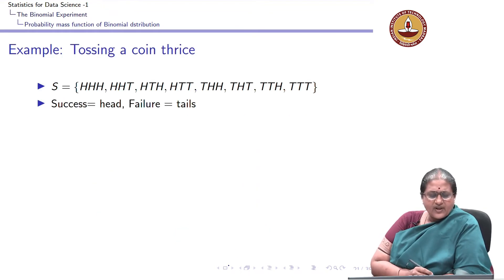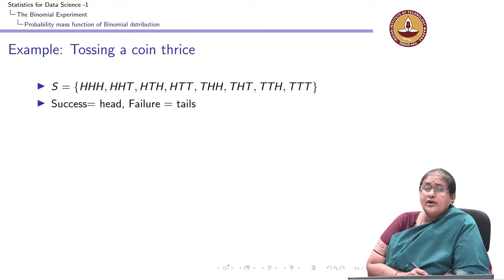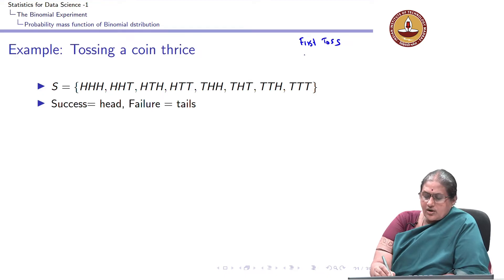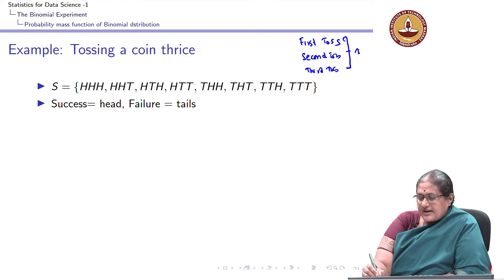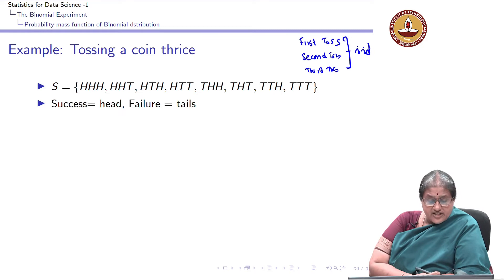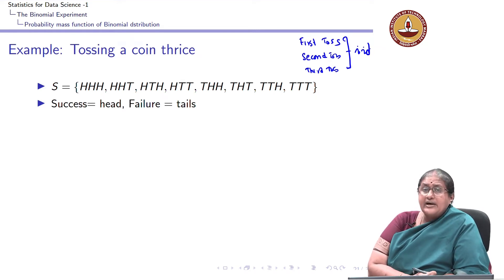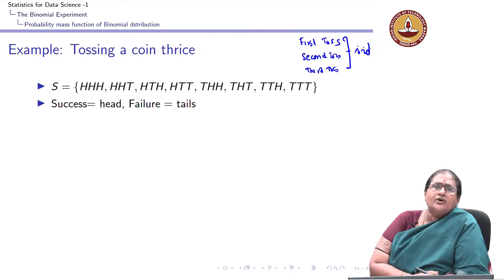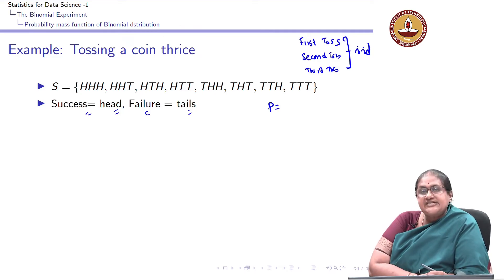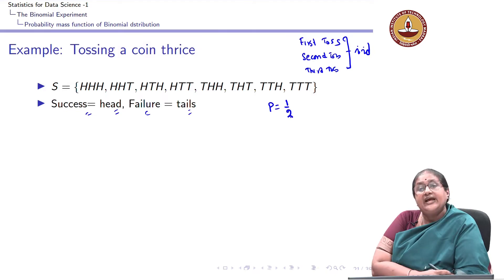Let us go back to our example of tossing a coin 3 times. In our earlier discussion, we said that tossing a coin — the first toss, the second toss, and the third toss — they are independent and identically distributed. A coin toss is a Bernoulli trial, with success being the appearance of a head and failure being the appearance of a tail. I am talking about a fair coin here, so the probability of success equals the probability of failure, which is one half.